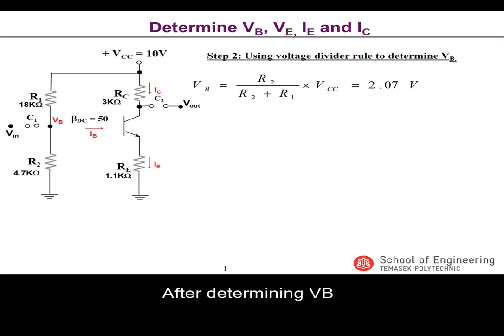After determining VB, we then proceed to determine the value of VE, the emitter voltage of the transistor in step 3.